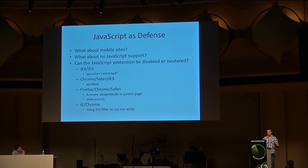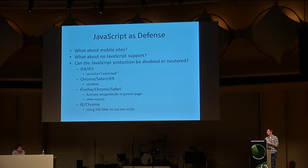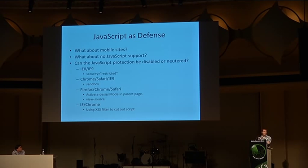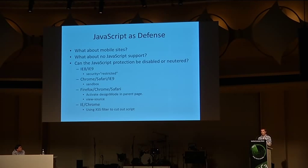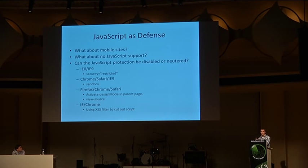My personal favorite way to disable or neuter JavaScript frame busters is using security protections of the browser against itself — because I like the irony. Internet Explorer and Chrome have XSS filters to cut out script, and when they see script in the URI, sometimes they'll filter out JavaScript. How they work is: sometimes you can use these against the browser and actually filter out the frame busting script. So you're using a protection mechanism designed to prevent cross-site scripting, but using it to disable the frame-busting script.